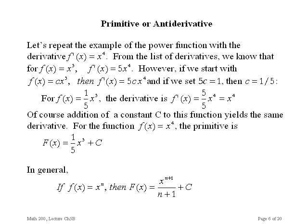Now let's find the primitive for a power function. Say I want the primitive of x to the 4th. I know it has something to do with x to the 5th, but the derivative of x to the 5th gives 5x to the 4th — the 5 is extra. If I started with a constant c times x to the 5th and differentiated, I'd get 5c times x to the 4th. If c is 1 over 5, it cancels the 5. So the primitive of x to the 4th is 1/5 times x to the 5th.